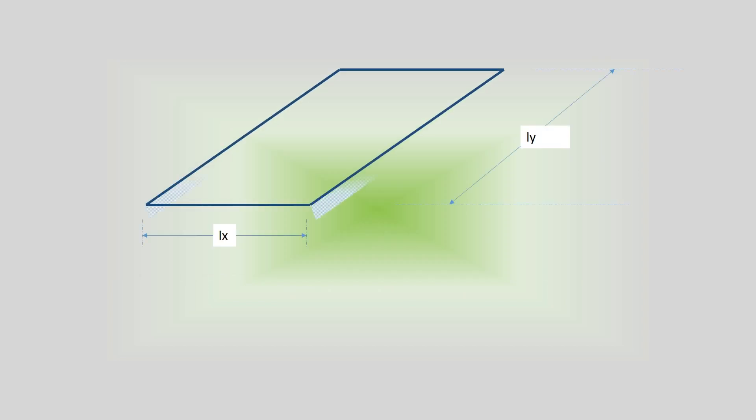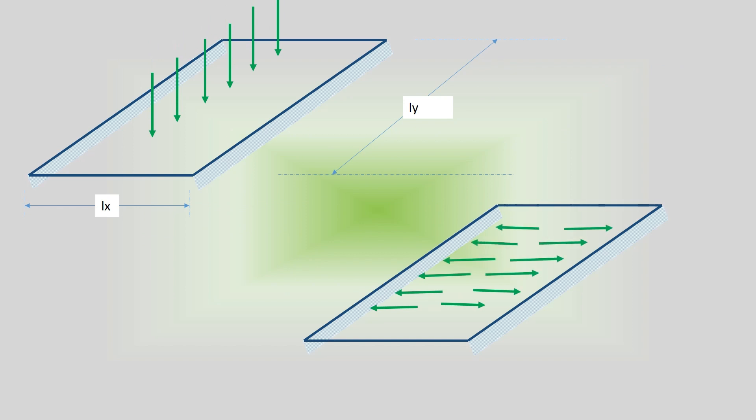As shown, the load imposed on the slabs is transferred to the support and then to the below structure. Under this action of load, the bending of the slab occurs along the shorter direction, perpendicular to the supports.